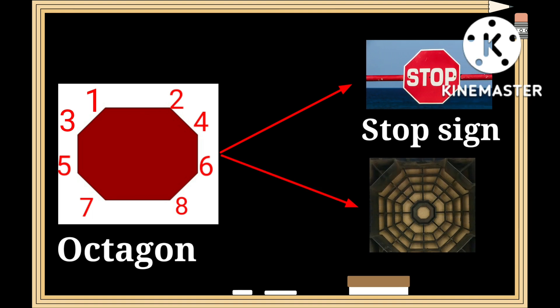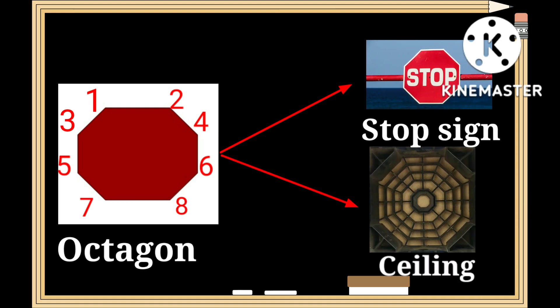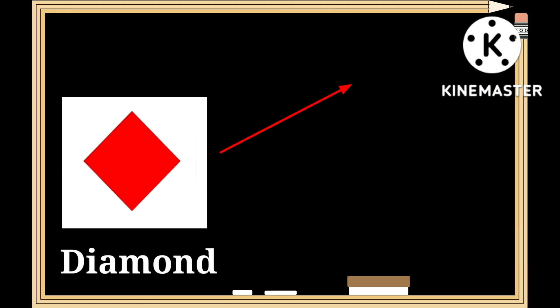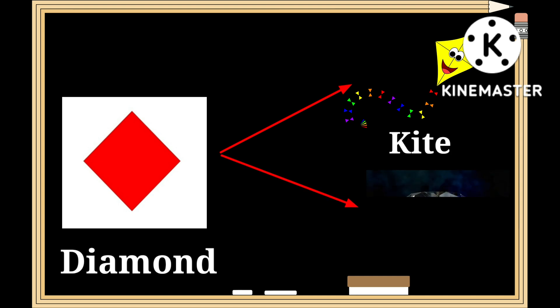This is a shape of an octagon — o-c-t-a-g-o-n. It has eight edges. The shape of a stop sign and a ceiling tile have a similar shape to that of an octagon.